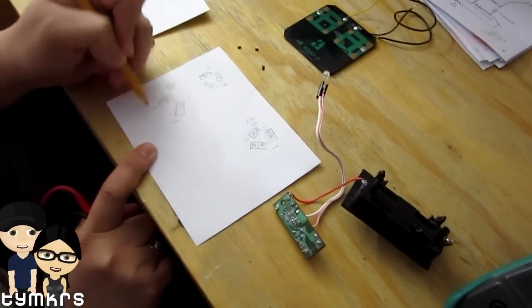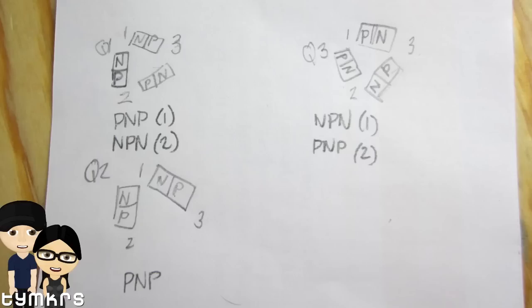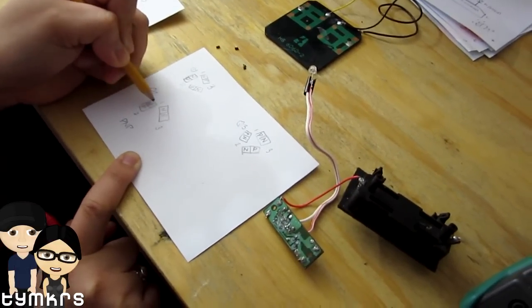So let's take Q2, which is the easiest. This is a PN and a PN. So what you're going to end up is a PNP transistor with 1 as the base, right?